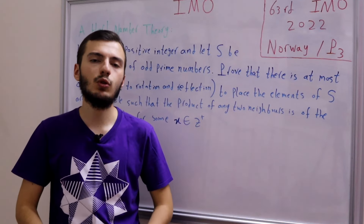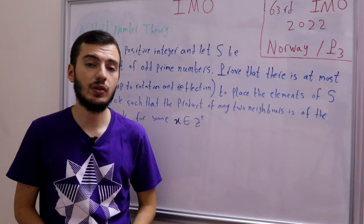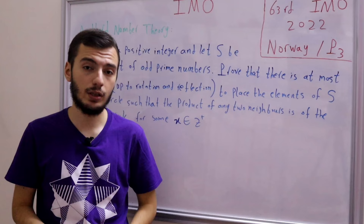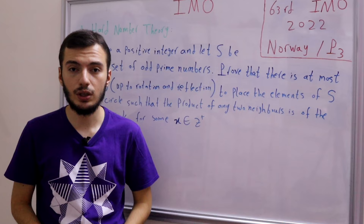Hi everyone and welcome to my YouTube channel. We're continuing our review for IMO 2022, which was held in Norway. In the previous two videos we discussed problem 1 and problem 2. Problem 1 was a combinatorics problem, problem 2 was an algebraic problem — a functional inequality — and now we'll be discussing problem 3, which is a number theory problem.